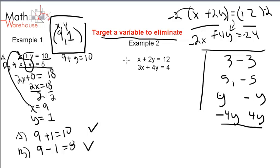We are going to multiply the top equation by negative 2. We end up with negative 2x plus negative 4y equals negative 24, and the same equation on the bottom: 3x plus 4y equals 4.